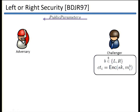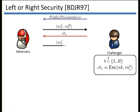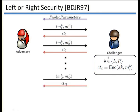First, the challenger gives the public parameters to the adversary, and the adversary makes queries of pairs of plaintexts. Depending on the bit B, the challenger returns the ciphertext of either the left or the right message. This continues for a polynomial number of steps. At the end of the game, the adversary has encryptions of all the left messages or all the right messages, and tries to guess the bit B and break the scheme.